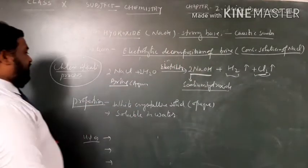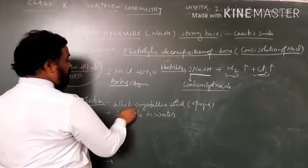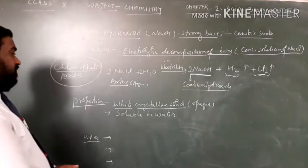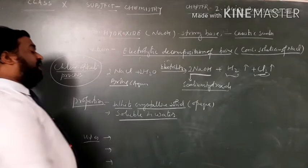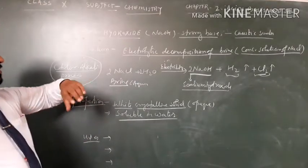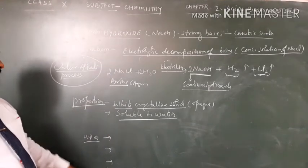Students, this sodium hydroxide is a white crystalline solid in the form of pellets. Sodium hydroxide is soluble in water. And if any base is soluble in water, then it is an alkali.